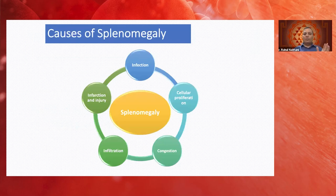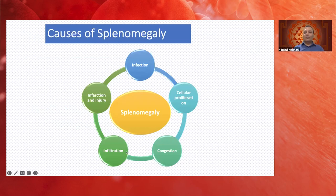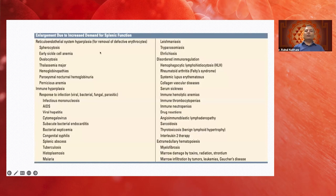The causes of splenomegaly map to its functions — any exaggerated function leads to splenomegaly. The common subsets are: infections, cellular proliferation, congestive splenomegaly, infiltration, and injury/infarction. Regarding reticuloendothelial system hyperplasia, causes include hereditary spherocytosis, early sickle cell anemia, hereditary ovalocytosis, thalassemia major, other hemoglobinopathies, paroxysmal nocturnal hemoglobinuria (especially the hemolytic variant), and pernicious anemia.